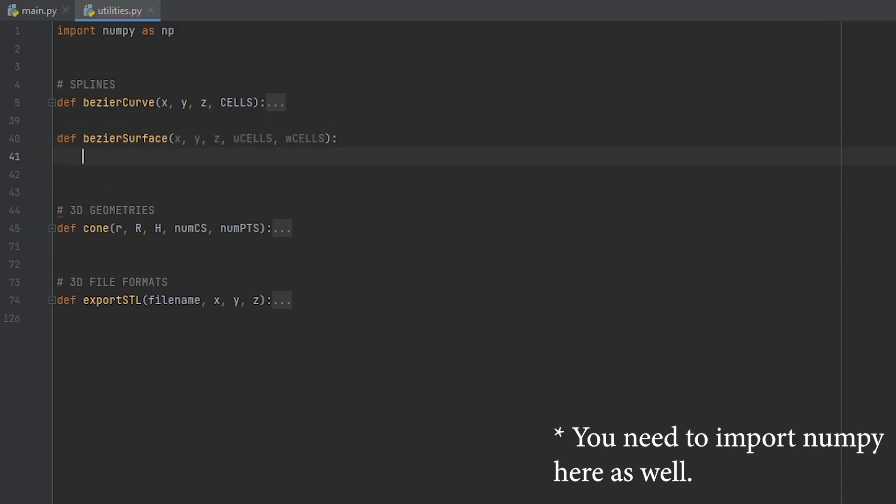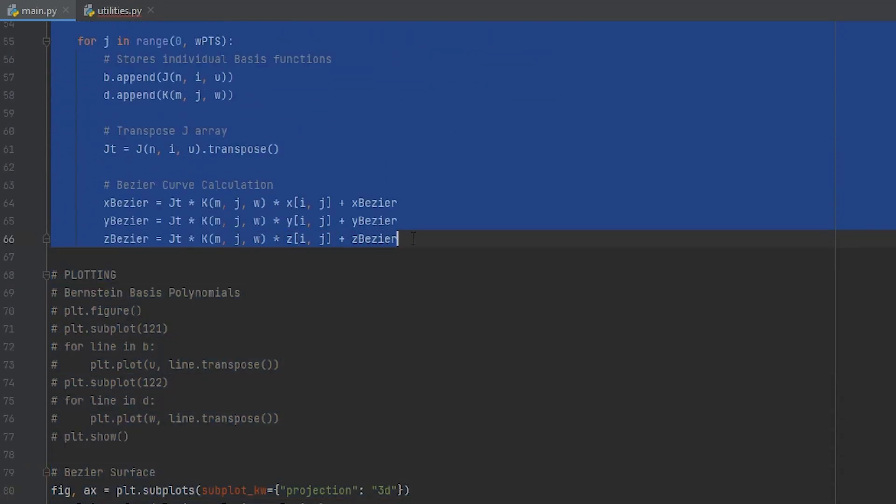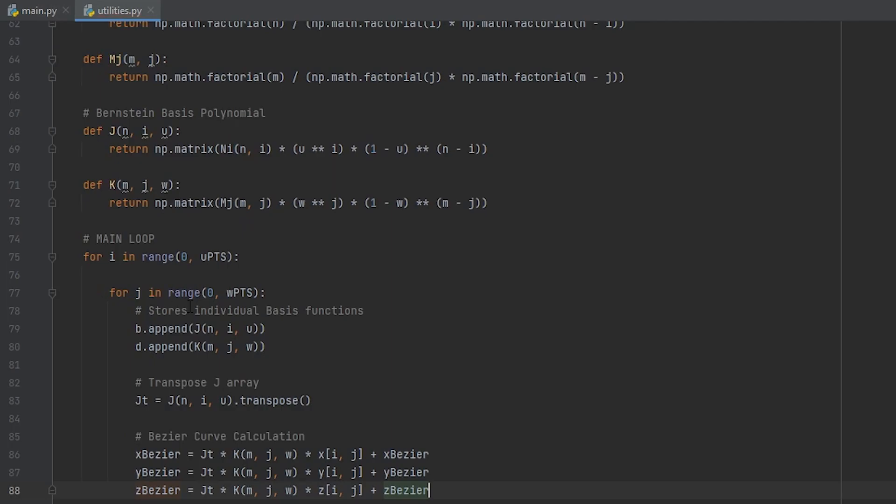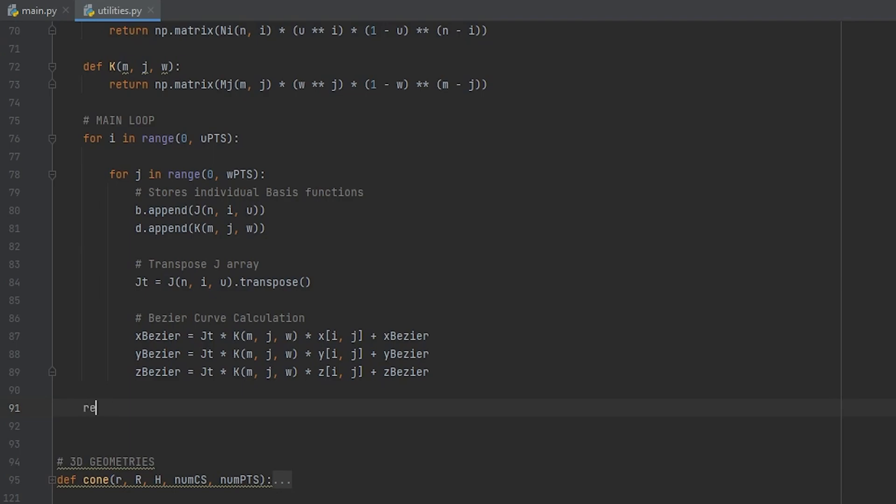Open a new function so def and call it anything you want I will call mine Bezier surface and it will take as arguments the control points x, y, and z in both cells go back to the code copy everything after we specify the cells except for the plots paste it inside the function in your .py file and add at the end a return x Bezier y Bezier and z Bezier because these will be your outputs for the function.